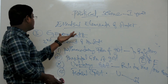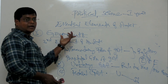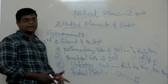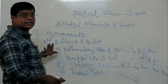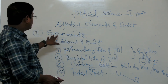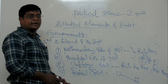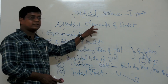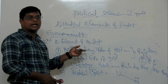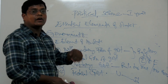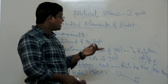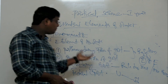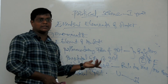So we have discussed the government element of the state. There are four essential elements; out of them, government is the brain and heart of the state. Without the government, the state cannot function. The state functions only through the government, and the government functions through its three organs: Legislature, Executive, and Judiciary.